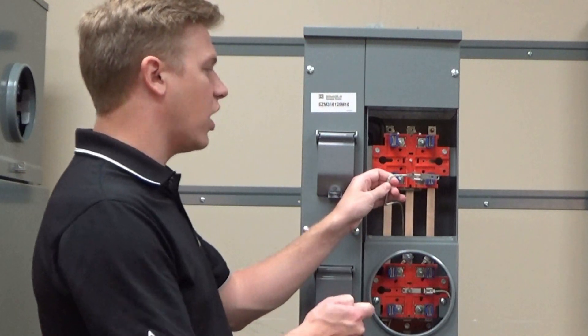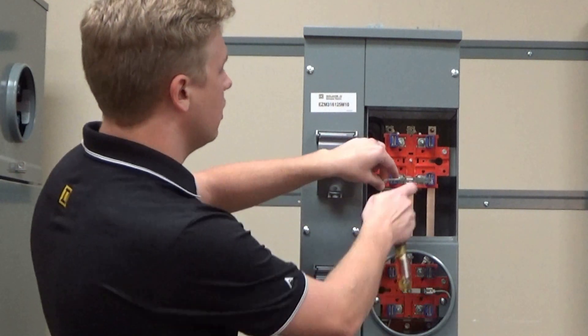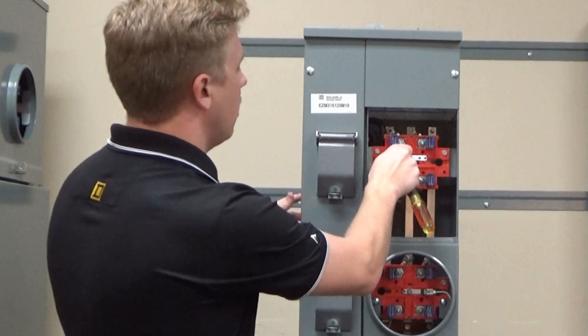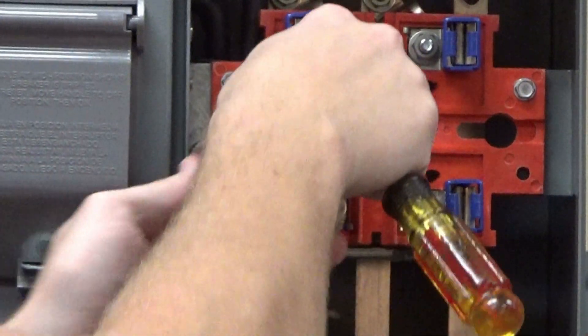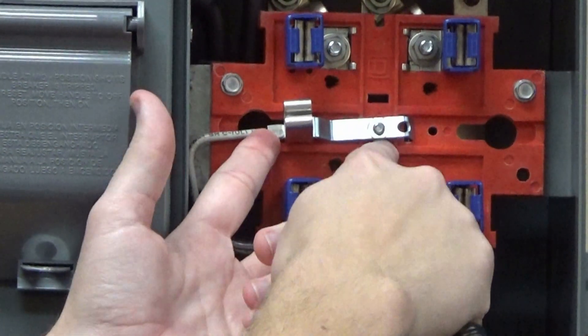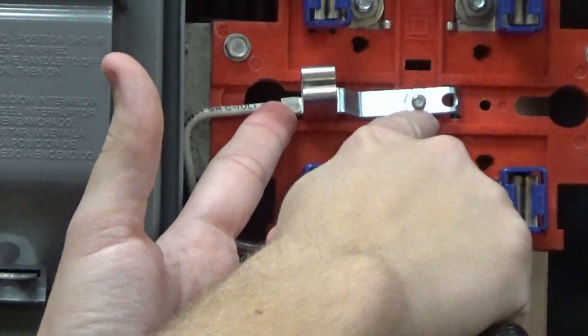Once you have the wire attached to the neutral and the fifth jaw assembly, you will arrange the fifth jaw assembly onto the meter socket so that this hole lines up with the screw in the middle.